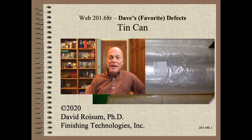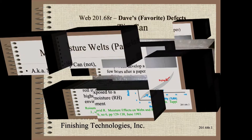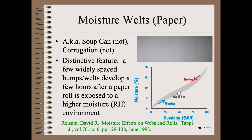We will begin by saying what the tin can is not. First, tin cans are not moisture welts, though they do have a superficial resemblance because both have annular ridges. They both share a similar expanse of physics. However, a moisture welt is caused when a hygroscopic web, namely paper, is wound at a moisture level that is not in equilibrium with the environment.